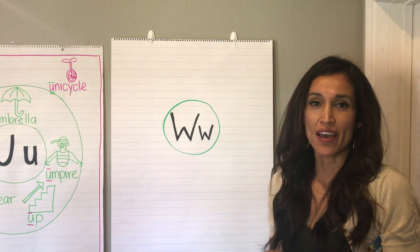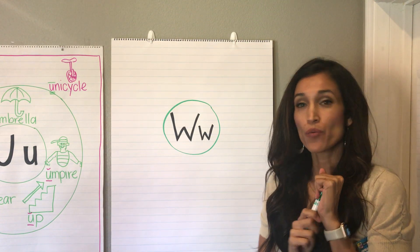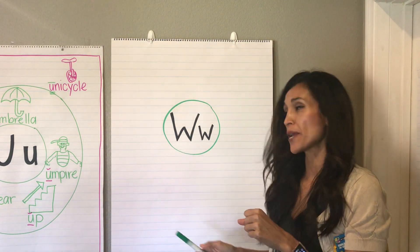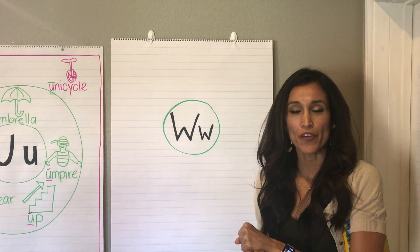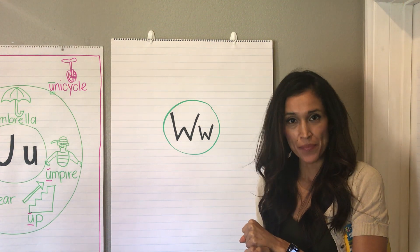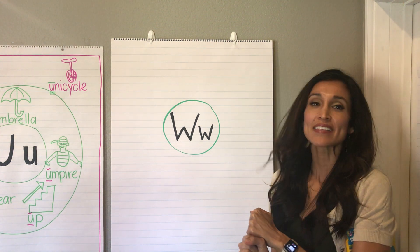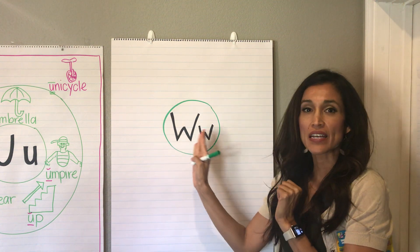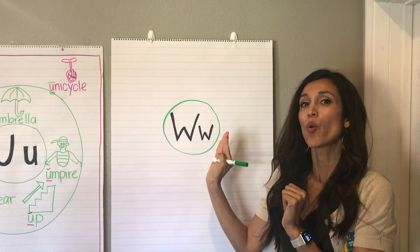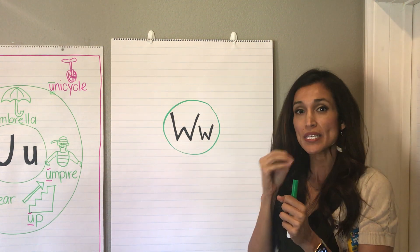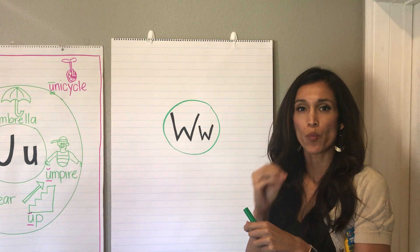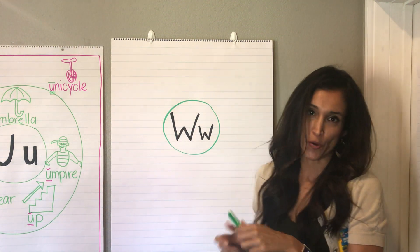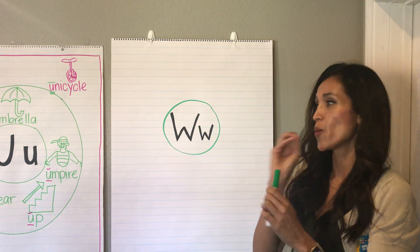Hey there, kindergarten. I am ready to go with my letter W today. W has the alpha friend, Willie Worm. The beginning sound for all of our words today are going to have that W sound. And remember, it's a short sound — W. So don't add that W on the end of it, okay? It's just W.